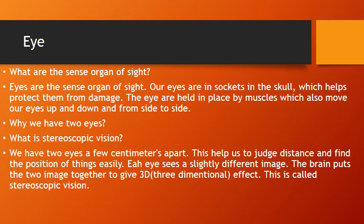The sense organ of sight is the eyes. Our eyes are set in sockets in the skull, which help protect them from damage. The eyes are held in place by muscles, which also move our eyes up and down and from side to side.